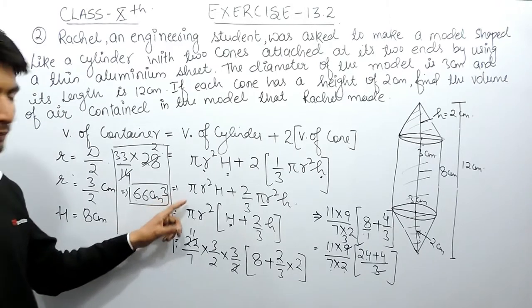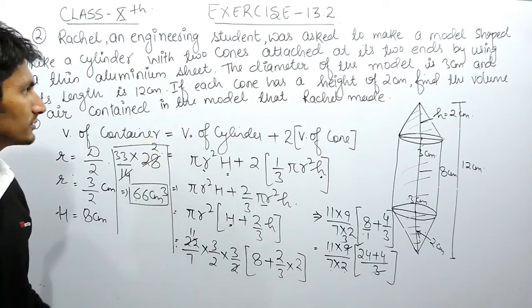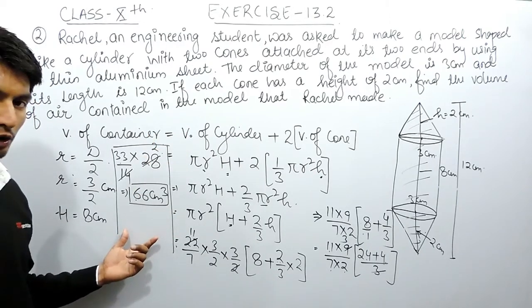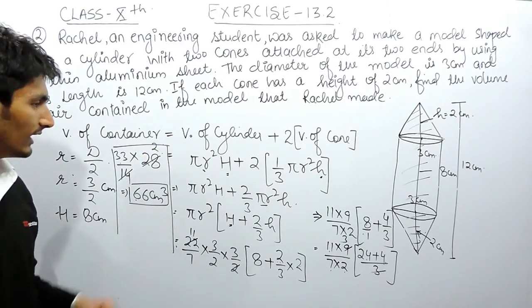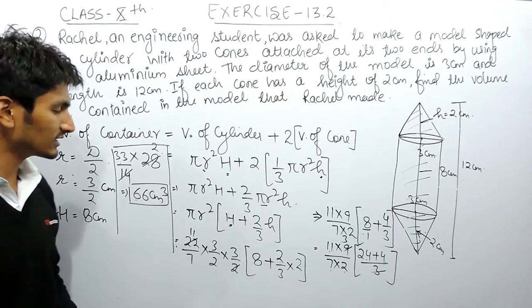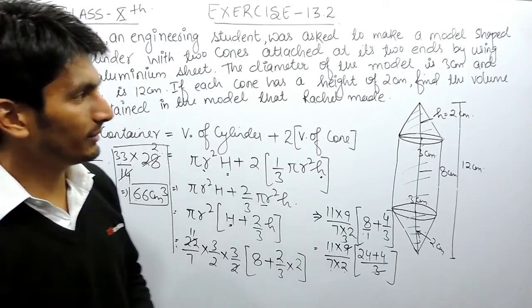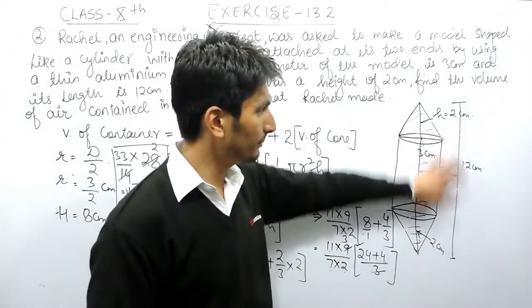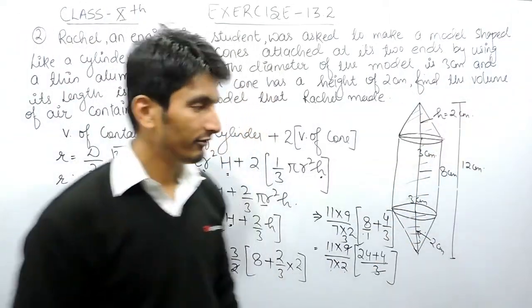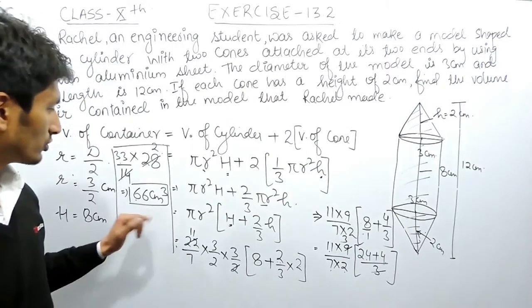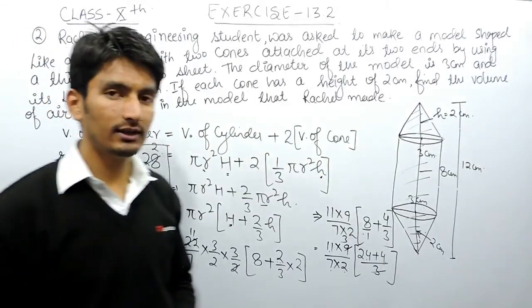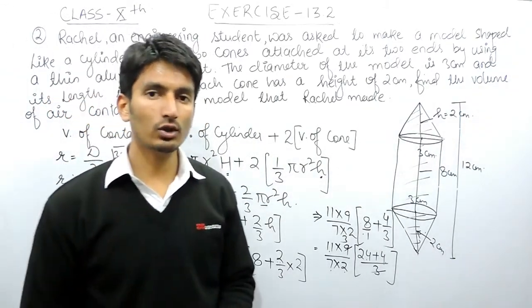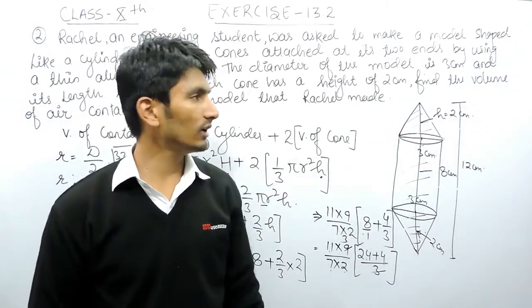The unit will be in cubic centimetres because the question is asking for volume. So the answer is 66 cm³. The volume of this complete figure is equal to 66 cm³. This is how you can solve this question.